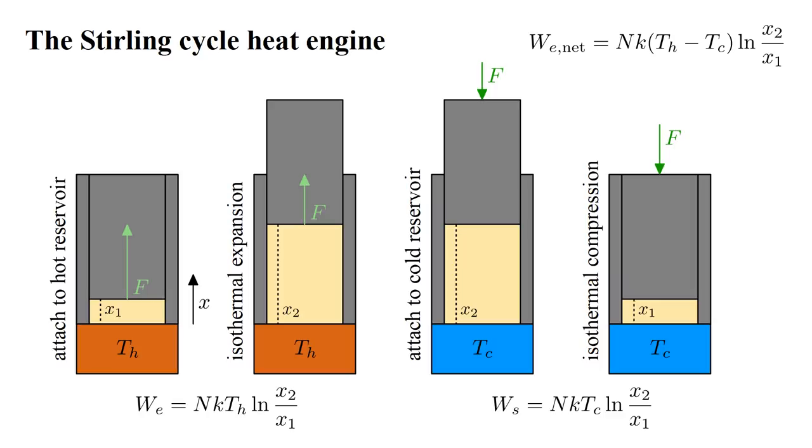The cycle is now complete. We can replace the cold reservoir with the hot reservoir and repeat the cycle for as many times as desired. Because expansion occurs at high temperature and pressure, and compression occurs at low temperature and pressure, the work done on the environment during expansion is larger than the work done on the system during compression. So a net amount of work, NK times T hot minus T cold times natural log of X2 over X1, is produced by the engine.